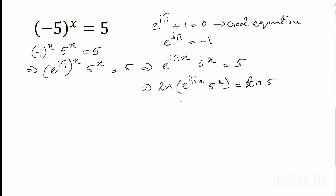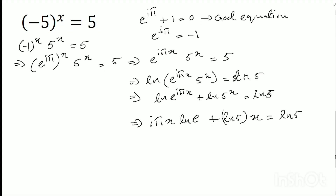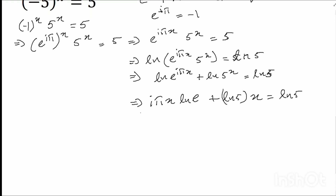Log means ln. We know the property ln(ab) = ln(a) + ln(b). So I use: ln of e to the power i pi x, plus ln of 5 to the power x, equals to ln 5. Applying the logarithm formula: i pi x plus x ln 5 equals to ln 5, because ln(a^n) = n ln(a).